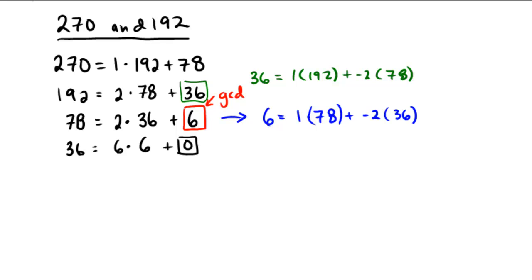From this line we can see that 36 is equal to 1 copy of 192 plus minus 2 copies of 78. And from the top line we can actually see that 78 is equal to something we know. 78 is equal to 1 copy of 270 plus negative 1 copies of 192. So remember, our whole goal is to write 6. I'm coming back down to this blue one here, and I'm going to say 6 is equal to 1 times 78 plus negative 2 times 36, but I'm going to substitute the green in there to say that this is 1 copy of 192 plus minus 2 copies of 78.